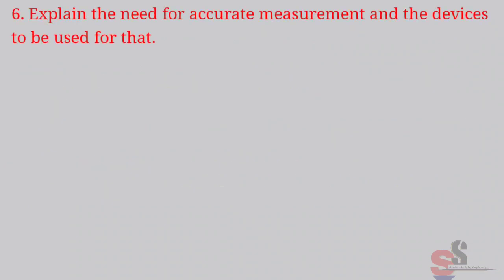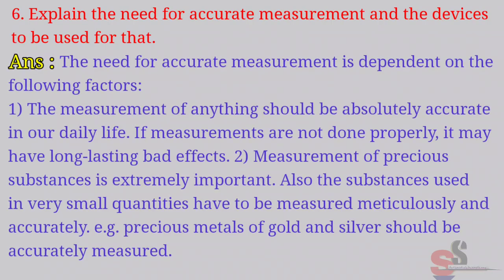Question 6: Explain the need for accurate measurement and the devices to be used for that. Answer: The need for accurate measurement is dependent on the following factors. First one, the measurement of anything should be absolutely accurate in our daily life. If measurements are not done properly, it may have long-lasting bad effects.